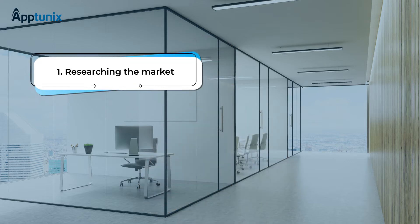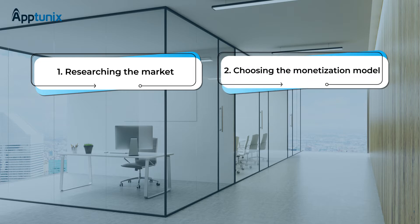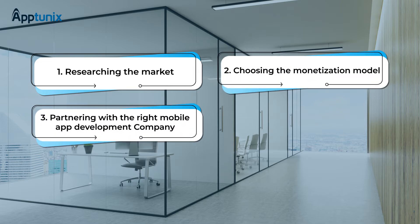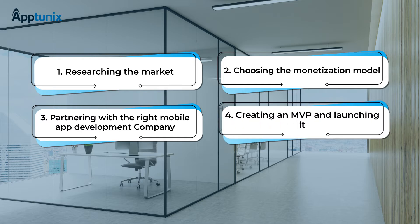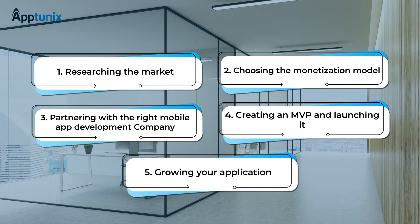Next, we're going to discuss the steps of developing an app like TikTok. There are five steps involved: researching the market, choosing the monetization model, partnering with the right mobile app development company, creating an MVP and launching it, and growing your application.